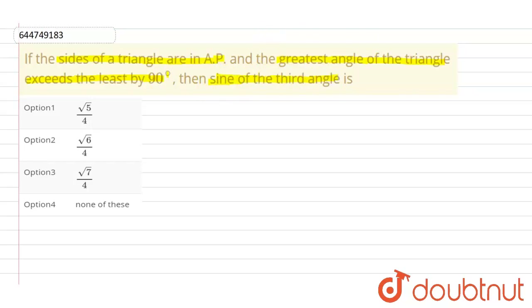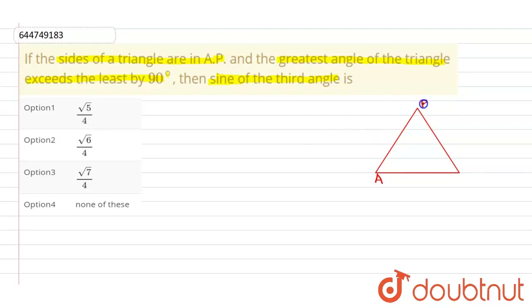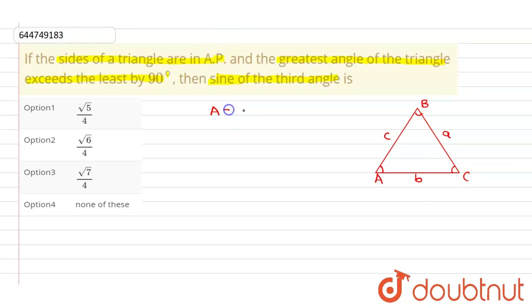Let us construct the triangle first. This is our required triangle with vertex A, vertex B, and vertex C. Therefore the opposite sides will be length a, length b, and length c, with corresponding angles A, B, and C. Let A be our greatest angle and C be our least angle, so A minus C equals 90 degrees. We need to find sine of angle B.